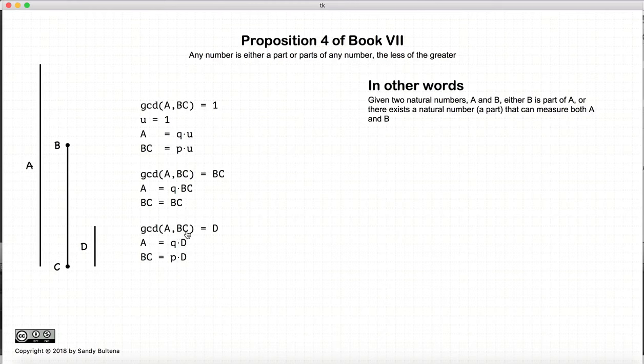And similarly, if the greatest common divisor of A and BC is equal to D, then D measures A, D measures BC, or BC is composed of parts of A. And that's it!